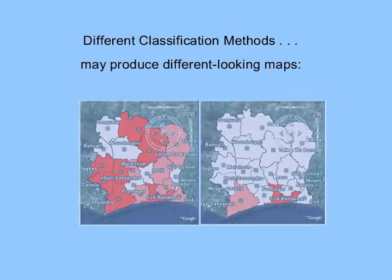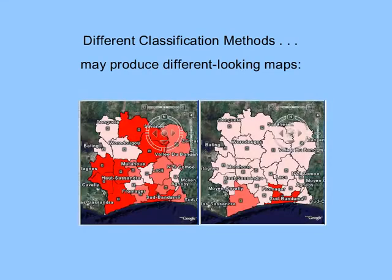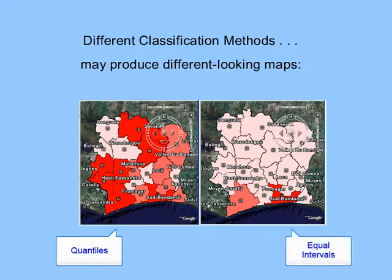Here you see two maps of Cote d'Ivoire — one that has had its data classed using the quantile classification method, the other using the equal interval method. Let's take a look at these two methods right now.